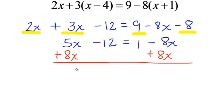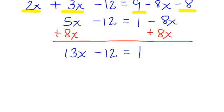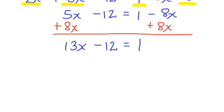Let's simplify. 5x and 8x is 13x. Bring down your minus 12 equals. On the right side, I only have one left. Now we are down to a simple two-step equation.